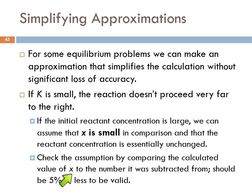You don't have to check against the exact value of X — you take the X calculated using the approximation and compare it to the initial concentration you're subtracting it from. It's like figuring out the mass of your cell phone separately and then comparing it to your body mass — if it's 5% or less, it doesn't matter. Let's do an example.